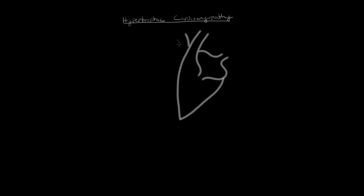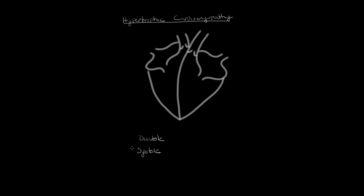I'm going to draw a simplified diagram of the heart. As we go through the cardiac cycle, I want to emphasize the two major phases known as diastole and systole. I'll describe what's going on in these phases by what's occurring in the ventricles — these lower chambers — including what's happening with the muscles and with blood.